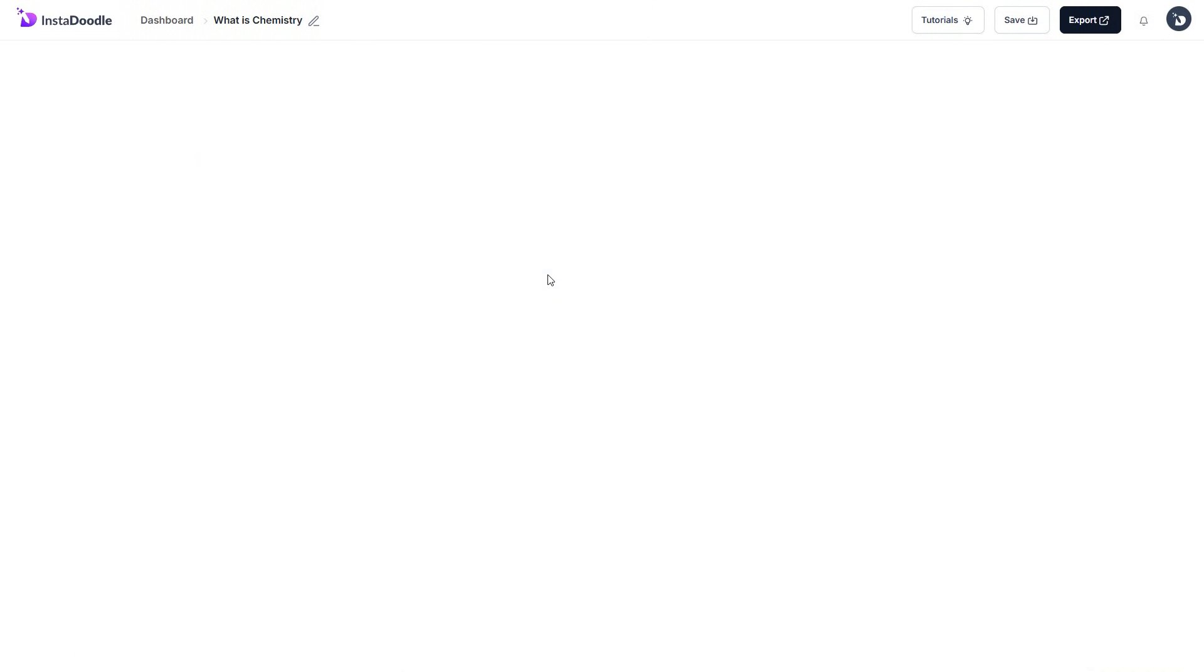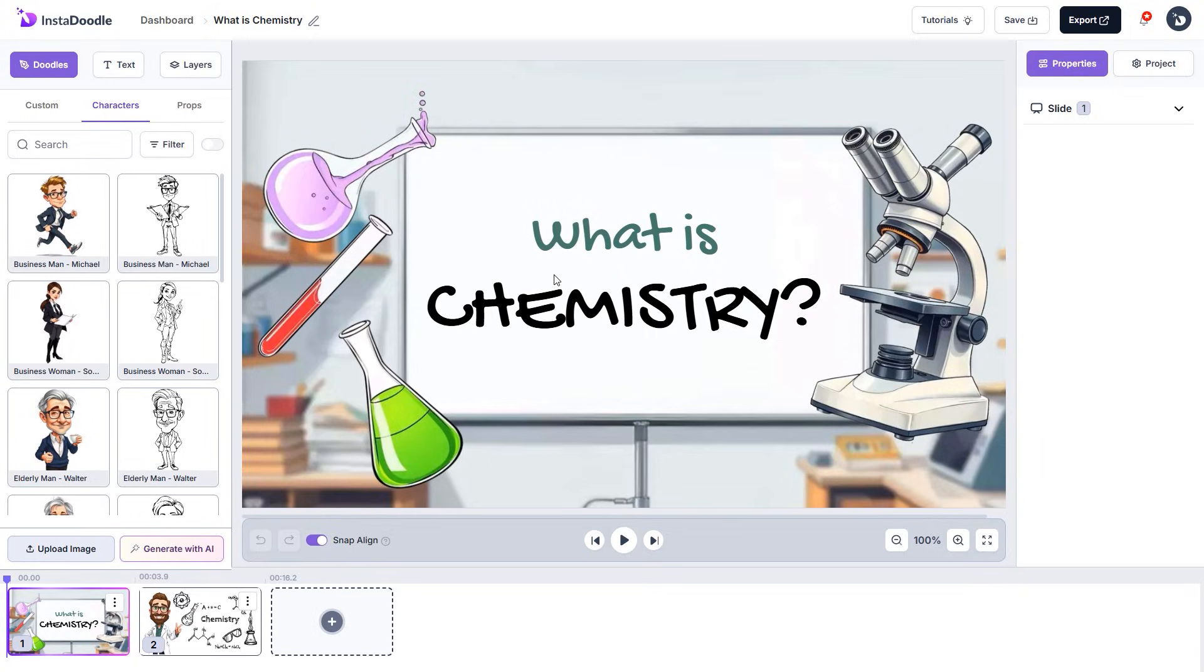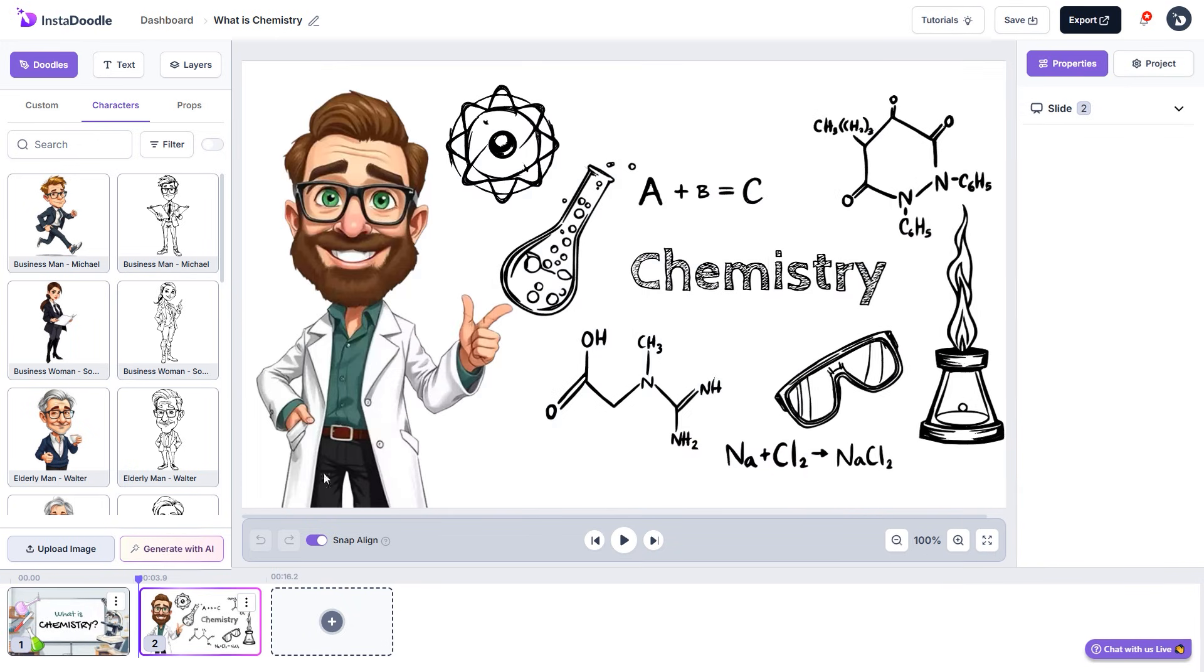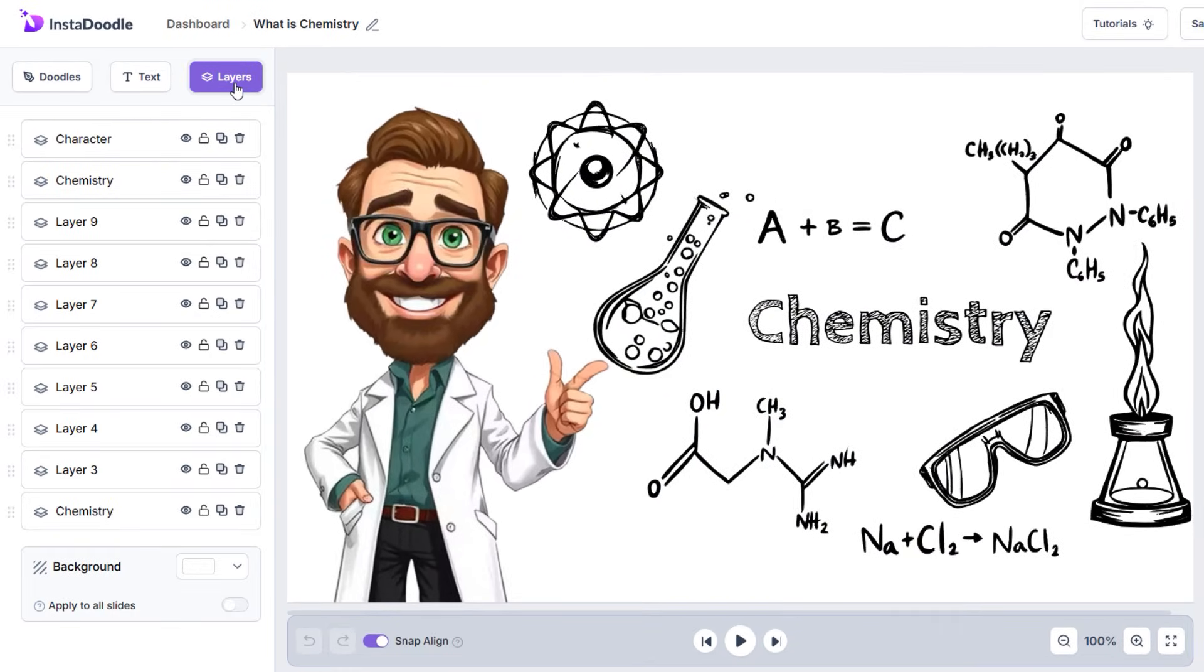Let's open one of the projects we've been working on. Now, the first slide doesn't really need a background, but the second one does. You can easily add a background by navigating to the Layers tab, where you will notice the new Background option below all of the layers in the slide.